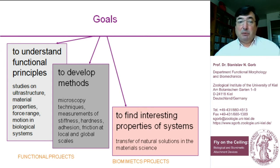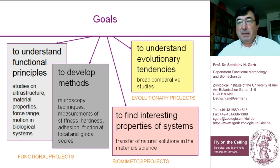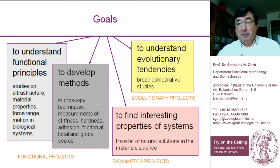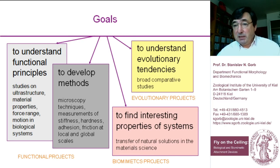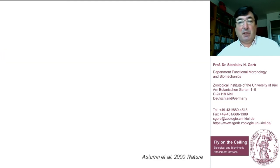When we find interesting progress in a system, we try to transfer these natural solutions into material science. As a biologist, an equally important part of my work is understanding evolutionary tendencies — how these kinds of structures appeared and developed. For this we perform broad comparative studies. Crucially, if we find that the same solution to the same problem appeared many times independently in different groups during evolution, we can speak about a kind of optimal solution — and that exploration is very important for transfer into material science.